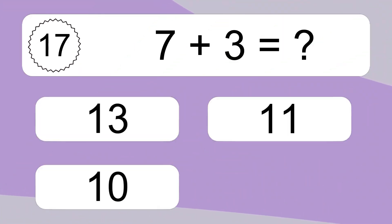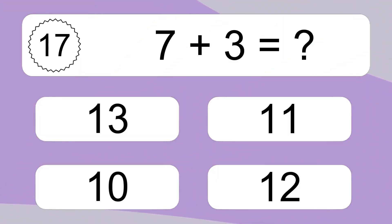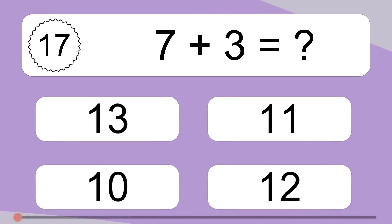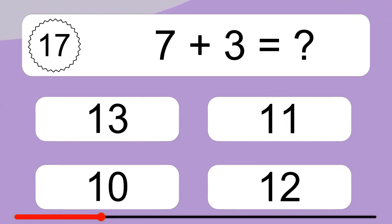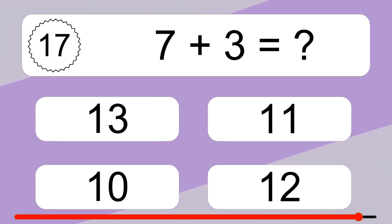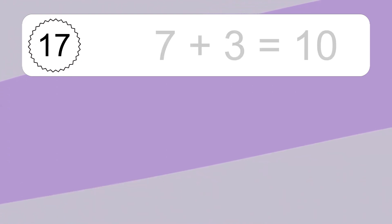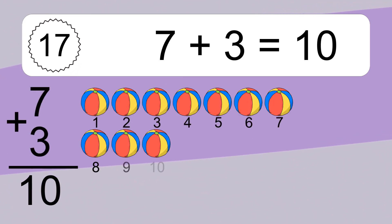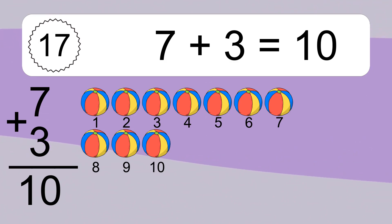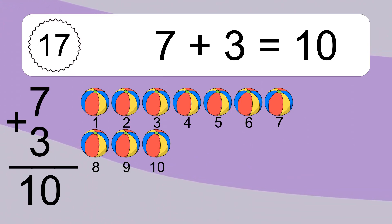7 plus 3 equals what? 7 plus 3 equals 10. Let's count it. 1, 2, 3, 4, 5, 6, 7, 8, 9, 10.